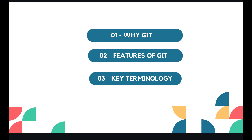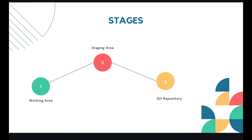Let's understand the three stages of Git. The first stage is the working area or working directory. The second stage is the staging area. The third and final stage is the git repository. These are the three stages most commonly used in Git.